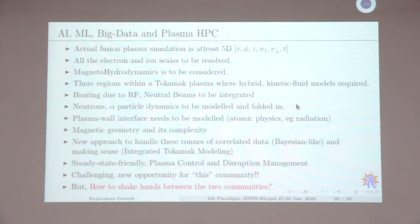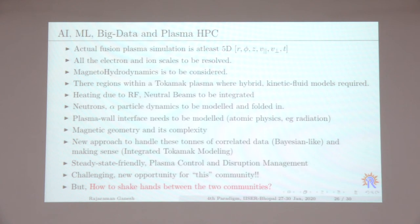The actual problem is much more complex. Full fusion plasma simulation is at least a five-dimensional problem — six dimensions with time. You need to resolve electron and ion scales, consider magnetohydrodynamics, account for hybrid models in different plasma regions, include heating effects to maintain 150 million degrees, and handle neutrons and alpha particles. You need new approaches to handle tons of correlated data — Bayesian-like methods — to achieve integrated tokamak modeling. Steady-state operation and plasma control are essential so that millions of joules don't disruptively escape.